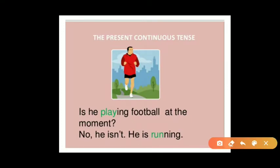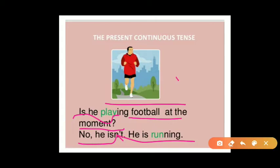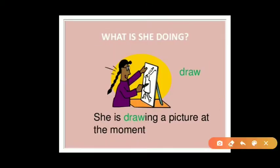Another example: in this picture a man is running. Someone asks 'Is he playing football at the moment?' The answer is 'No, he isn't playing football — he is running.' What the person is doing at that time is important in this tense. Present continuous tense expresses an action happening at the time of speaking, such as 'I am learning English' or 'I am reading.'